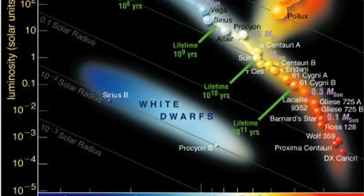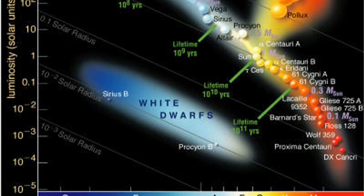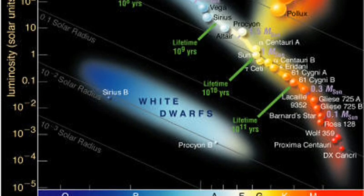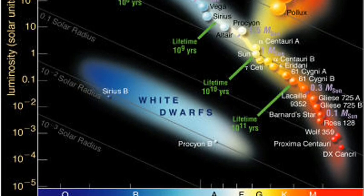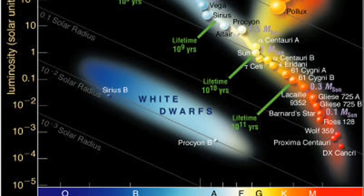Very massive blue stars are not in the main sequence very long. They quickly use up the oxygen in their cores, expand, and turn into giants or super giants. The sun is an average star.